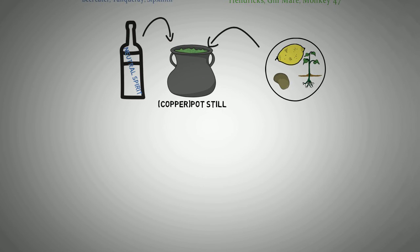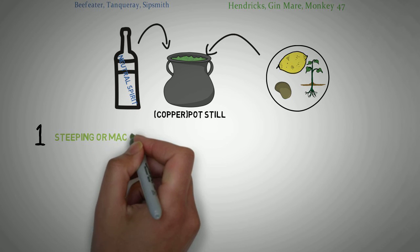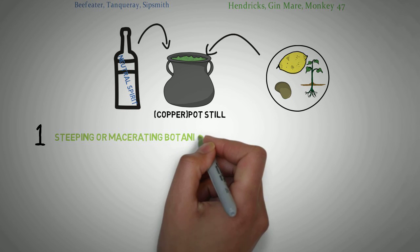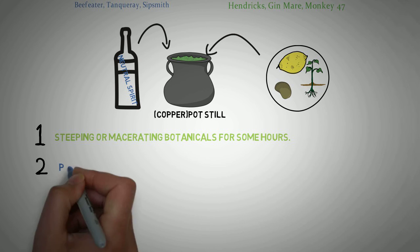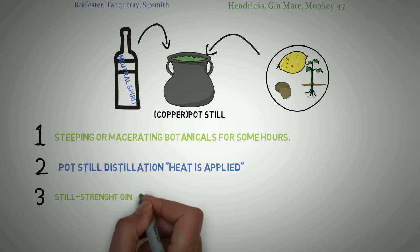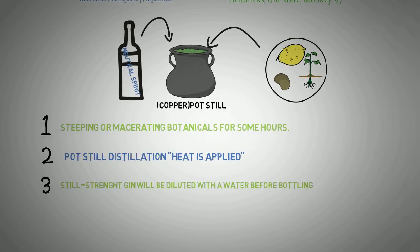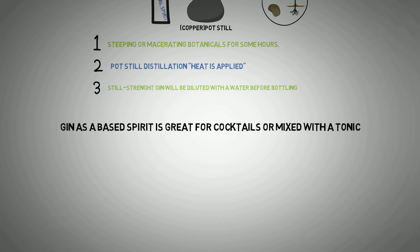Distillation is made traditionally in pot stills, which are usually copper. You add neutral spirit and botanicals and let them steep for some hours. Then the distillation process applies heat, and finally the gin is diluted with water before bottling. As a base spirit, gin is great for cocktails or mixed with tonic.